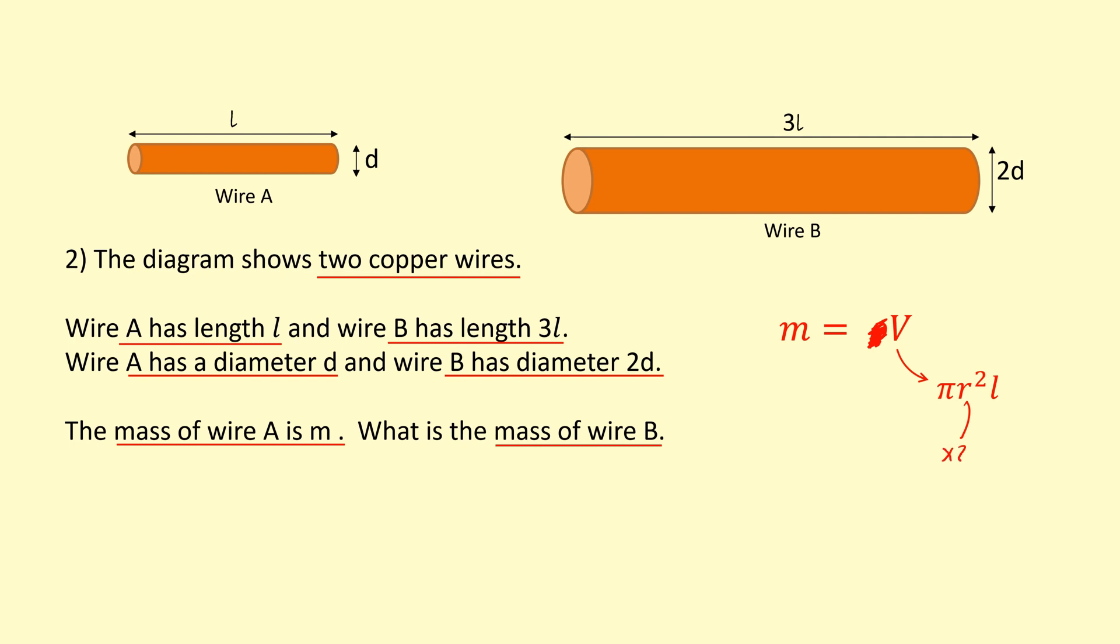And again, this is becoming times 2, that's going to get squared. This is times 3, so in total, the mass would be times 12 bigger for wire B, which makes sense.